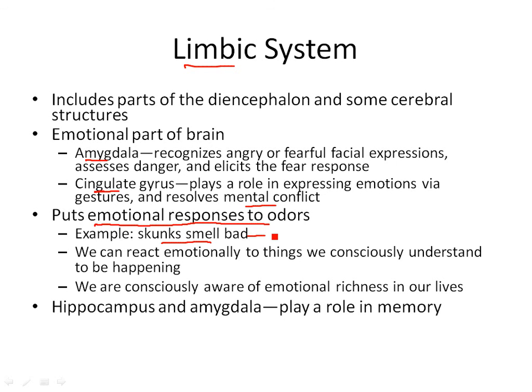The limbic system also allows us to be aware of our emotions — to be happy, be sad, things like that. Another area is the hippocampus and the amygdala, and those are involved in memory — we use that part of the brain to associate and make memories.